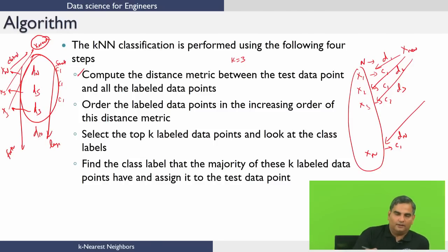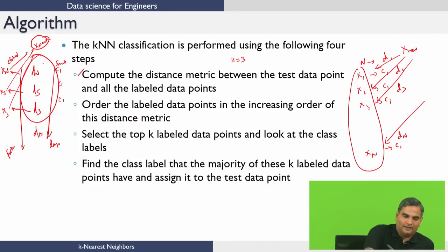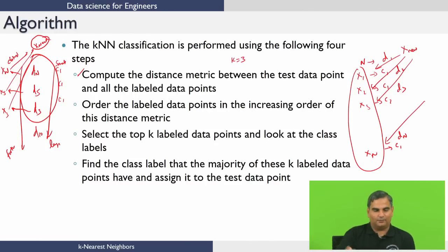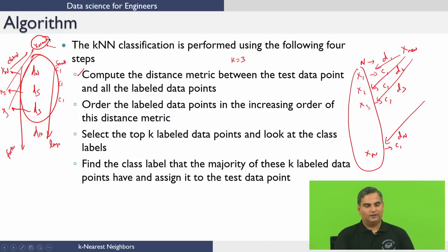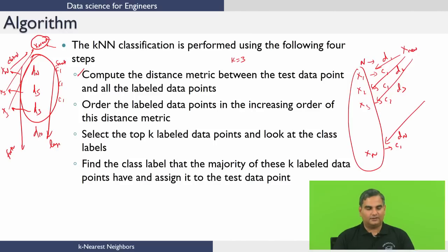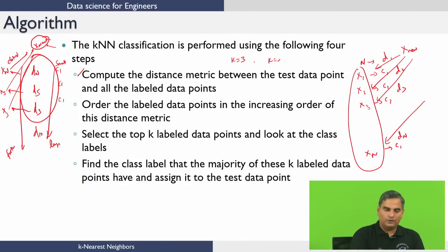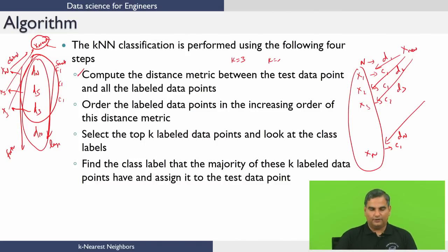This algorithm with minor modifications can also be used for function approximation. For example, if you want to predict an output for a new point, you could find the output values for the three nearest neighbors and take an average — that becomes the predicted output. That is an adaptation of KNN for function approximation problems. Nonetheless, for classification this is the basic idea. If K equals 5, you go down to five nearest neighbors and do the majority voting.